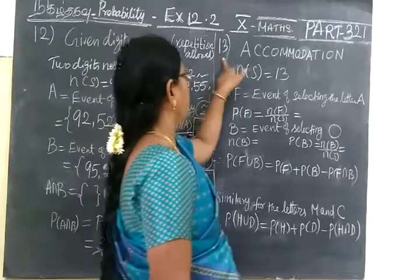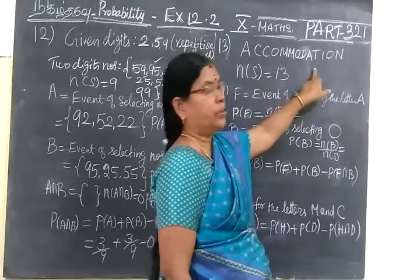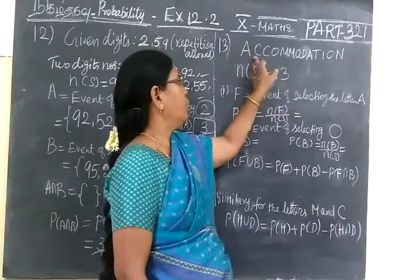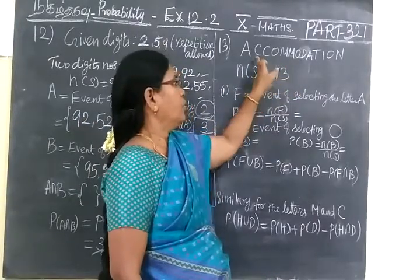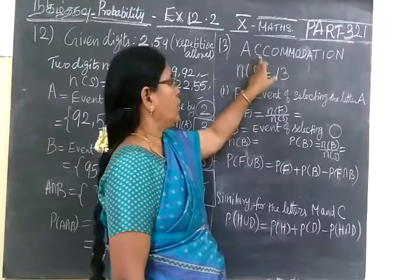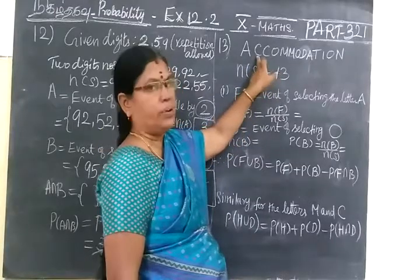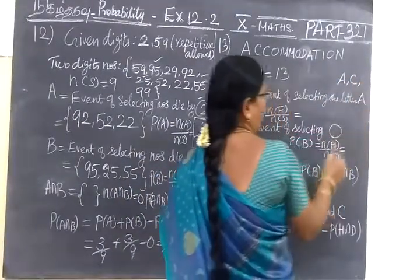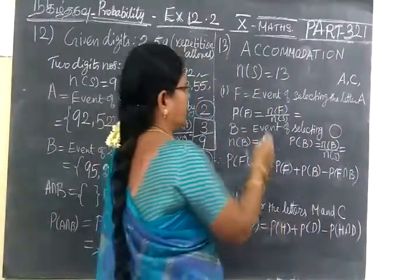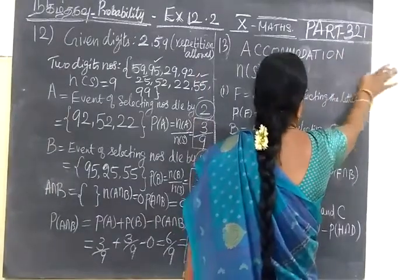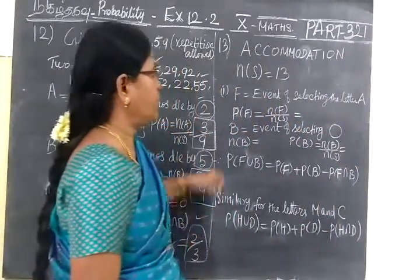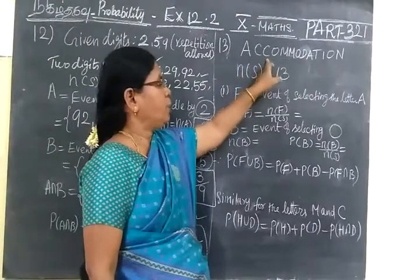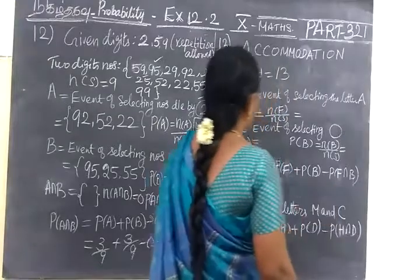It is given a word accommodation. Now in the word accommodation you can see 13 letters. In set language only we are not considering C, C, C if it is repeated means we write one time only, A, C, C one time only we write it. But here not in this way. We just will count the letters. In the word accommodation we see how many letters including the repeated letters.